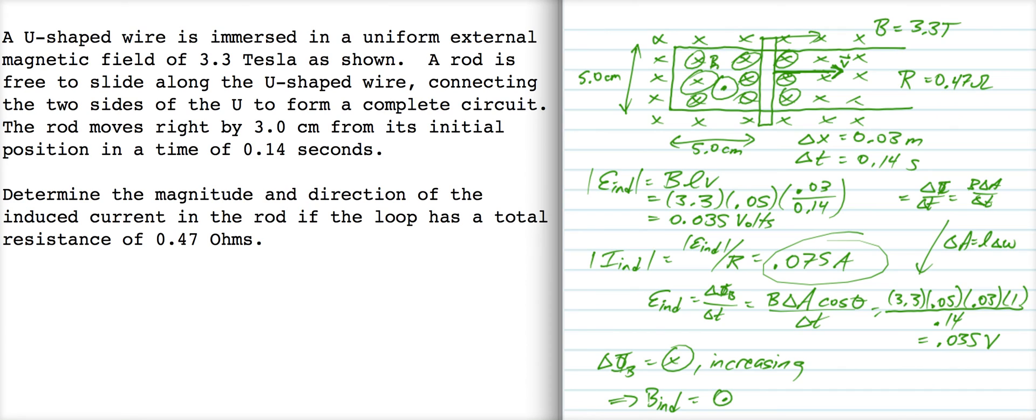So there's our induced field, points out of the page. Now the only way you get an induced field like this that points out of the page is if you've got an induced current that flows around like this, in a counterclockwise direction.